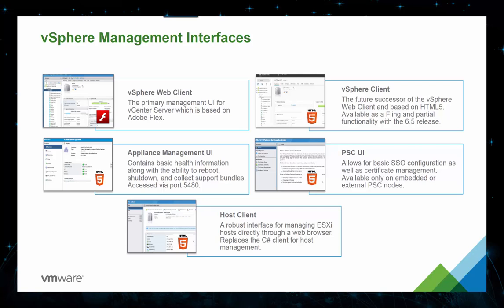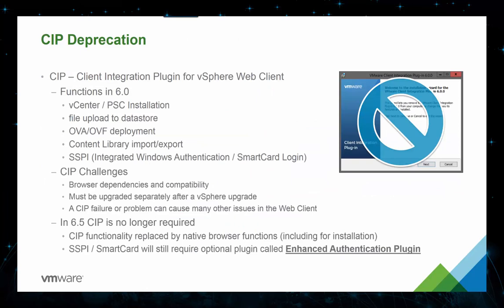There is also a similar interface specific to the Platform Services Controller where SSO configuration can be managed — including SSO users and groups, identity sources, and certificate management — all wrapped in a clean HTML5 interface. Finally, staying with the HTML5 theme, we have the host client. The host client started out as a VMware fling but made it into production as a vSphere 6.0 Update 2. The host client replaces the need for the legacy vSphere C# client when administrators need to connect directly to an ESXi host for configuration or troubleshooting.